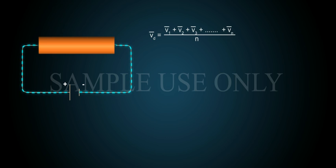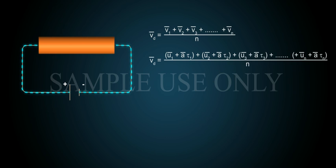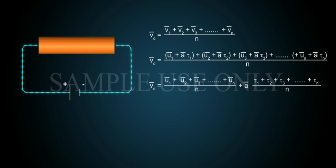Thus, vd bar equals (v1 bar plus v2 bar plus v3 bar plus so on plus vn bar) by n, which expands to (u1 bar plus a bar tau1 plus u2 bar plus a bar tau2 plus u3 bar plus a bar tau3 plus so on plus un bar plus a bar tau n) by n.